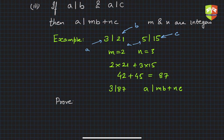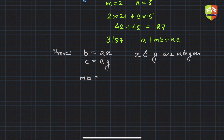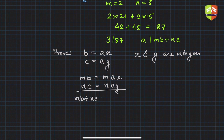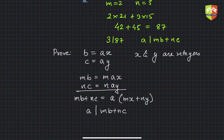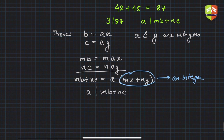To prove it: by definition, b = ax and c = ay where x and y are integers. Multiplying, mb = max and nc = nay. Adding the two equations, mb + nc = a(mx + ny). Since mx + ny is an integer, a divides mb + nc. This is also proved.